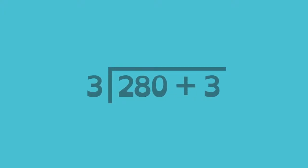Why does it help to think of a number in parts in long division? Since 283 is the same as 28 tens plus 3 ones, dividing 283 is the same as dividing 28 tens plus 3 ones.